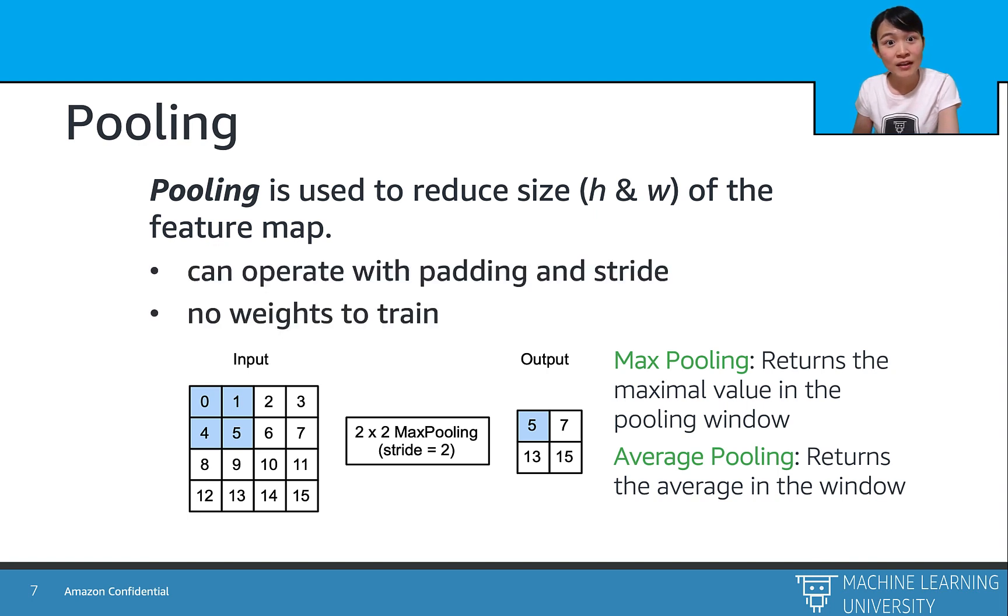Similarly to convolution, pooling is capable to operate with padding and stride. The biggest benefit for pooling is that we don't need to train any parameters for the pooling layer. As we can see from this example, we select 5, 7, 13, 15 as the max signal from each of the input windows.